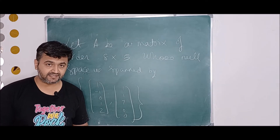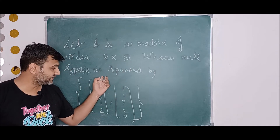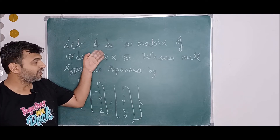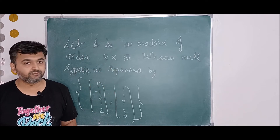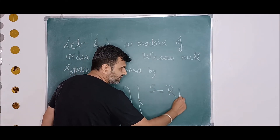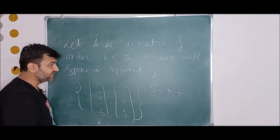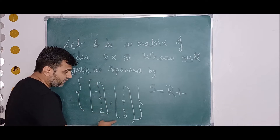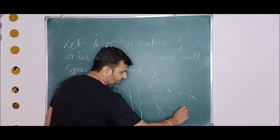Here is another question from a competitive exam. You have a matrix of order 8 cross 5 — eight rows, five columns — and the null space is spanned by two given vectors. The question asks for the rank. Even without knowing the matrix entries, since the number of columns is 5 and the two spanning vectors are linearly independent, the nullity is 2. Therefore by rank nullity, rank equals 5 minus 2, which is 3.